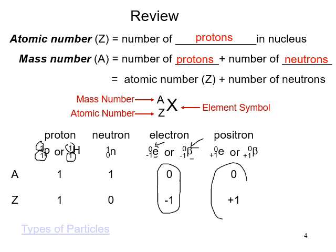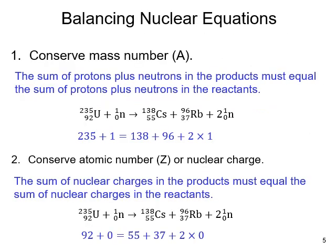An alpha particle — the largest of these subatomic particles — has a mass number of 4 and an atomic number of 2; it is a helium nucleus. These are actually 2+ charged. When balancing nuclear equations, the top numbers (mass numbers) must match on both sides, and the bottom numbers (atomic numbers) must also match. For example, 235 plus 1 equals 236, and all products sum to 236 as well.